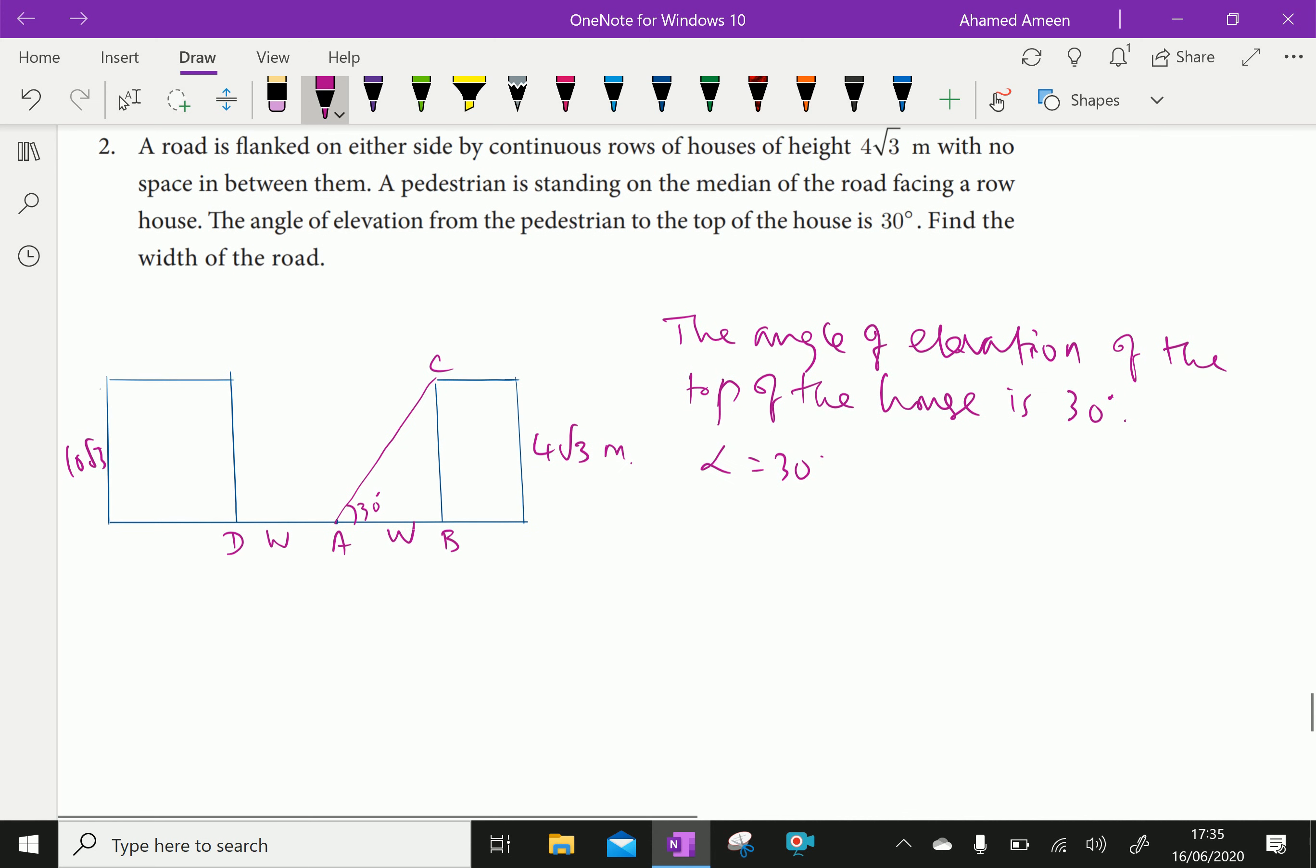Now, already 30 degrees is given. Therefore, tan alpha equal 4 root 3 over W, that is, BC over AB.